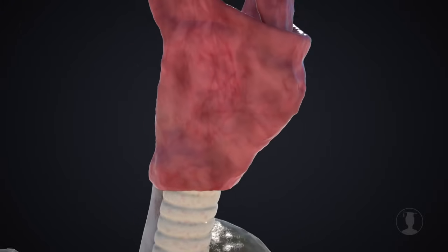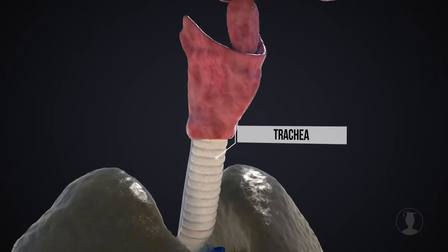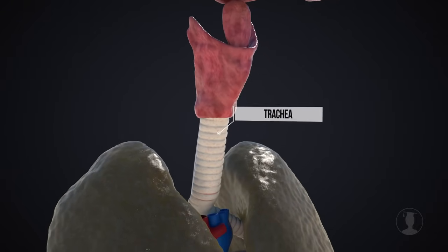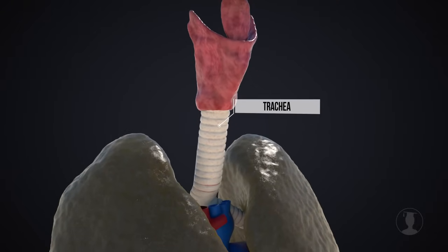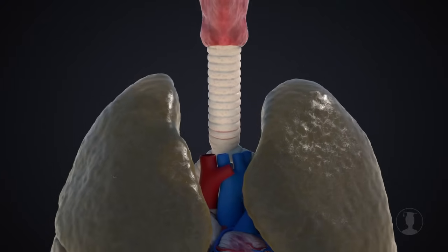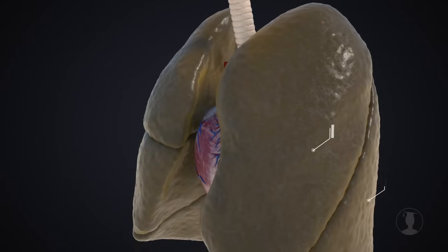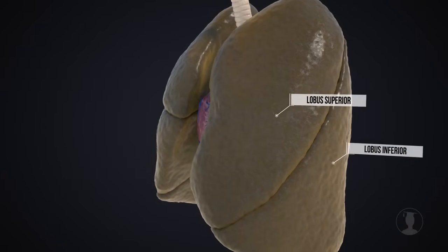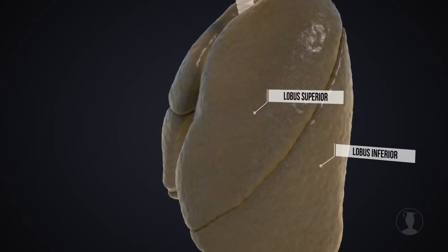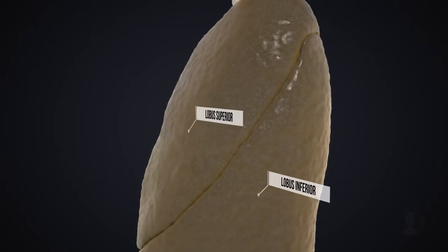The trachea, right below the larynx, is surrounded by incomplete rings of hyaline cartilage for reinforcement. Near the heart, the trachea branches into two main bronchi. The main bronchi lead to the left and right lungs. The left lung has only two lobes — upper and lower — whereas the right lung has three lobes.